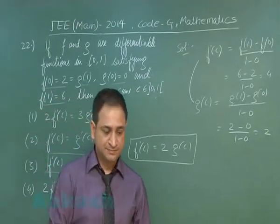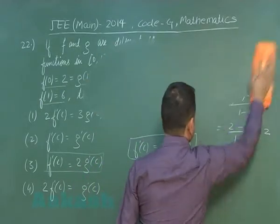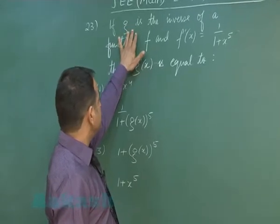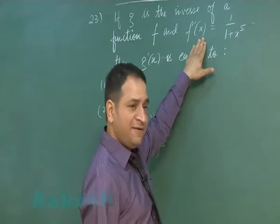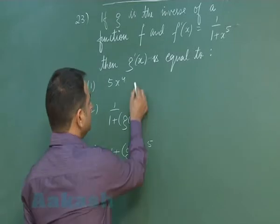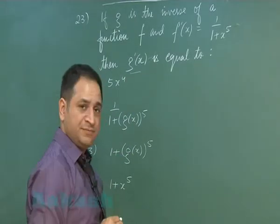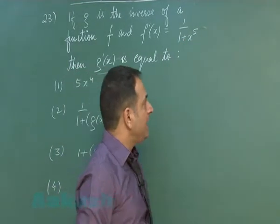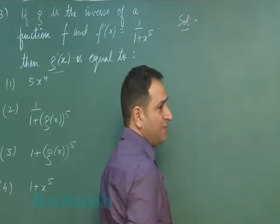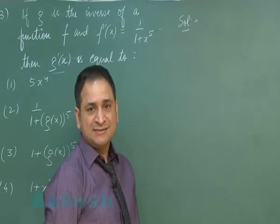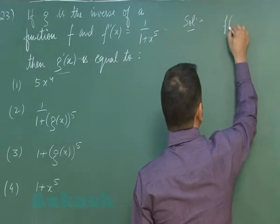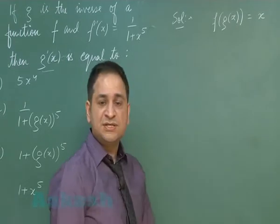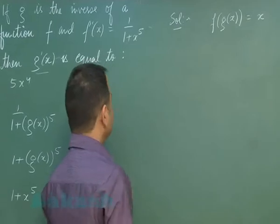Moving to question number 23. g is the inverse of function f. The function f itself is not given, but f'(x) is given as 1 upon (1 + x^5). We have to find the derivative of g, the inverse of f. Note that f(x) is not integrable, so we cannot calculate f(x) directly. Instead, we apply the important concept: if g is inverse of f, then f(g(x)) = x.